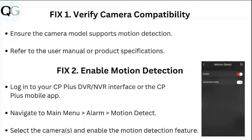Step two: enable motion detection. Log into your CP Plus DVR or NVR interface, or the CP Plus mobile app. Navigate to the main menu, then motion detect. Select the cameras and enable the motion detection feature.